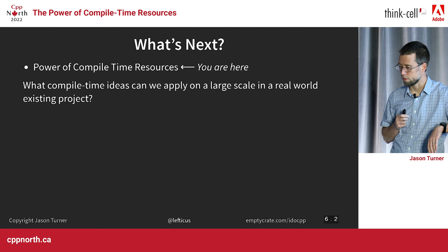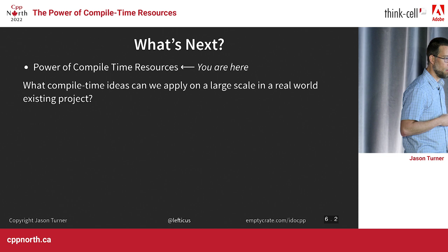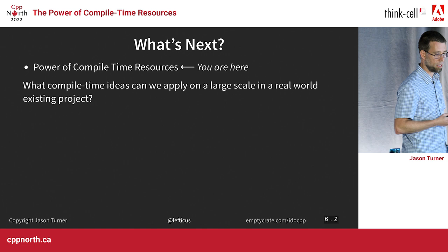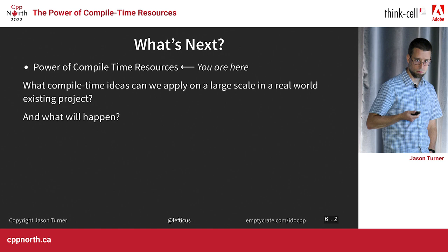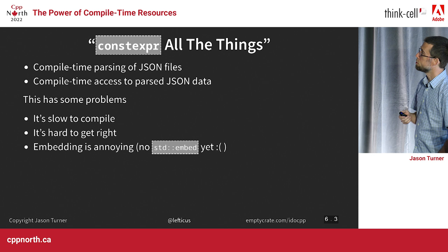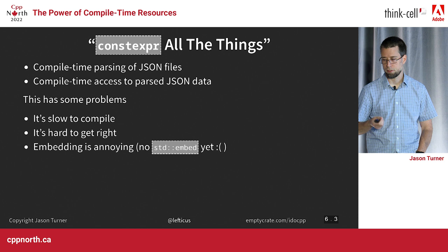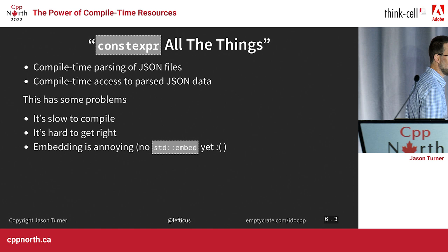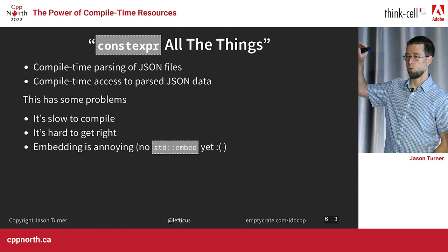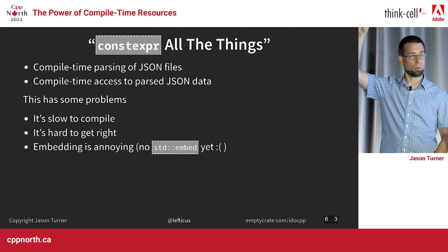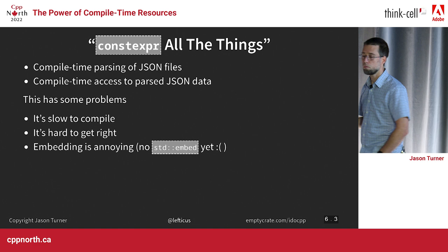Okay, so what's next? Power of compile time resources — what of these compile time ideas can I actually apply in some large-scale fashion to a real-world existing project? Referencing Constexpr All the Things: we did compile time parsing of JSON files and compile time access to that parsed JSON data. It was slow to compile, hard to get right, and embedding your JSON was incredibly annoying because we didn't have standard embed. Who wants the ability to embed files at compile time? Yes — about 60 to 70 percent of the room raised their hands. This is a real problem.